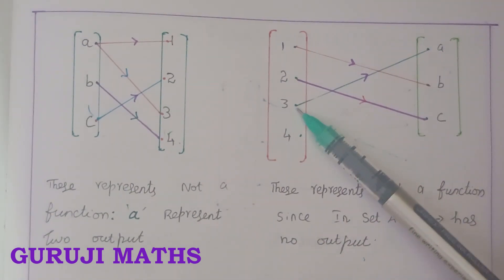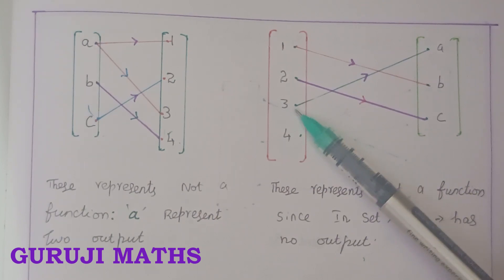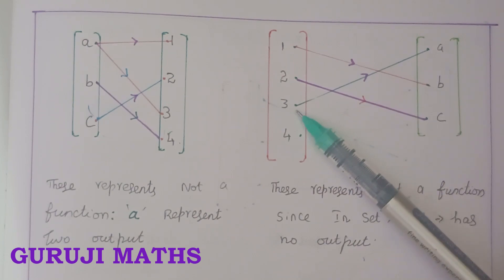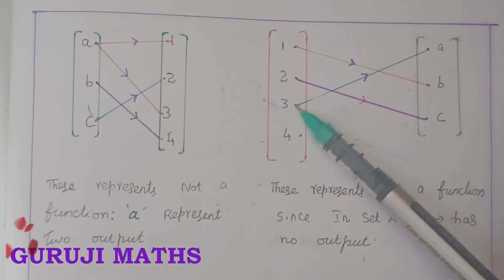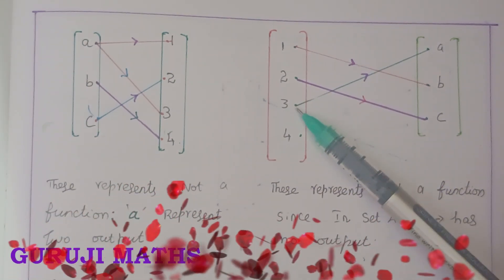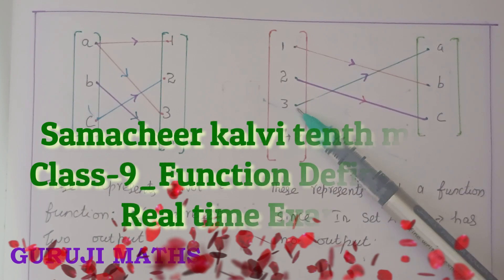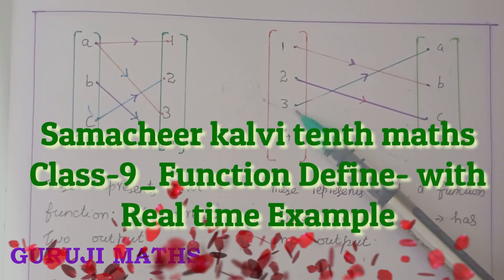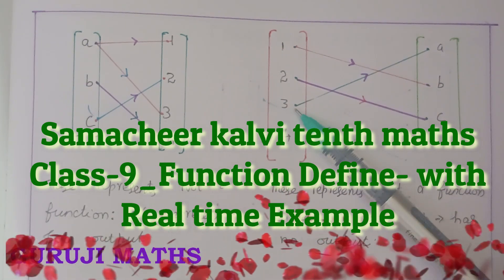So it satisfies the function corner definition — that is one example. If you want to check other problems, comment in the comment section and the answer will come in the next video. Thank you. Please like, share, comment, and subscribe. Thank you for watching. Bye bye!